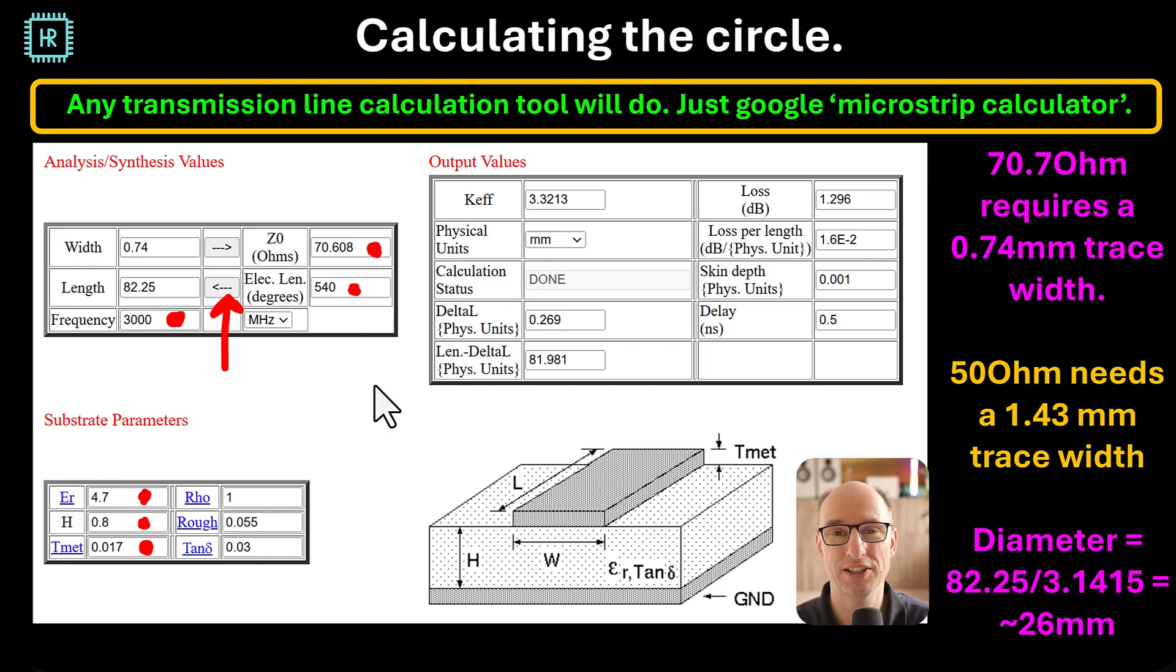Now in order to get the dimensions for those traces, you can pick any microstrip calculator on Google. You can just google 'microstrip calculator'—you'll get a lot of them. Wherever there's a red dot, there's something you need to fill in. So you need to fill in the frequency, which is 3 gigahertz, the epsilon r, the height, the metal thickness, the length, and the electrical length of the trace, which is 540 degrees—that is 1.5 times 360 degrees. And then you press this button and it'll calculate it.